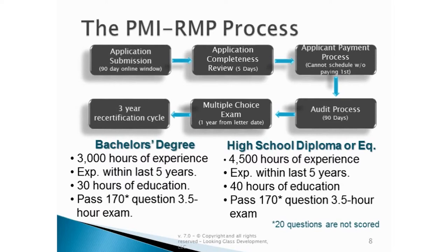If you're not audited and you do get your completeness review, PMI — after that five-day period — will try to notify you of your acceptance or declination for the RMP exam. That notification, if you've provided an email address, will be done electronically, so we highly recommend that you provide PMI with a valid email address. Once you get that notification, you then need to pay PMI and go through the applicant payment process — you cannot schedule your exam until you have completed that payment process.